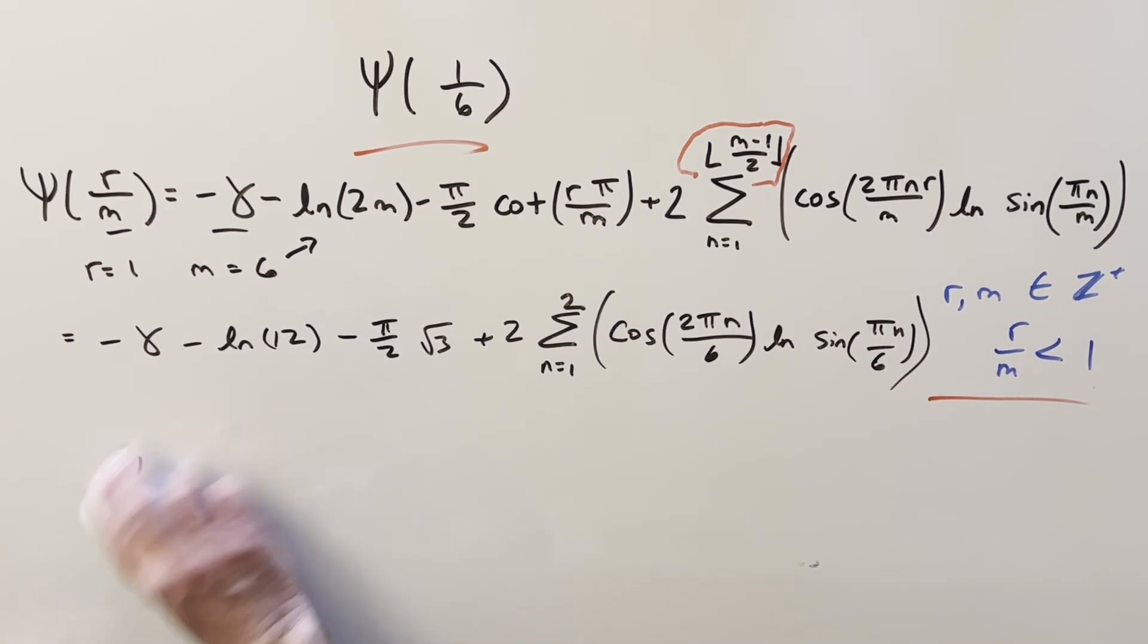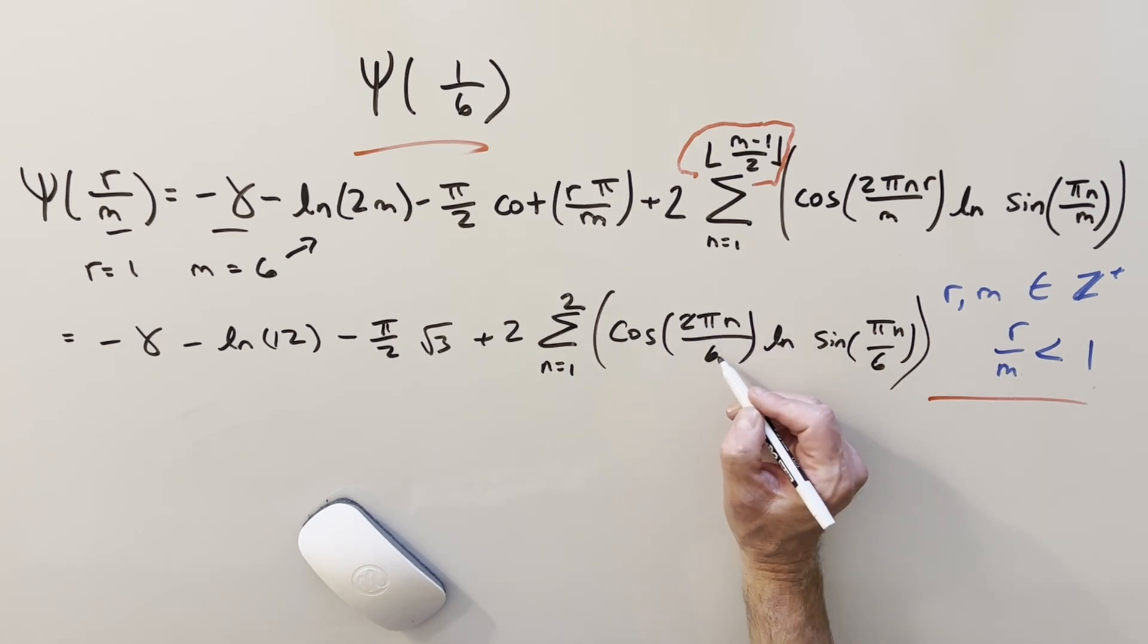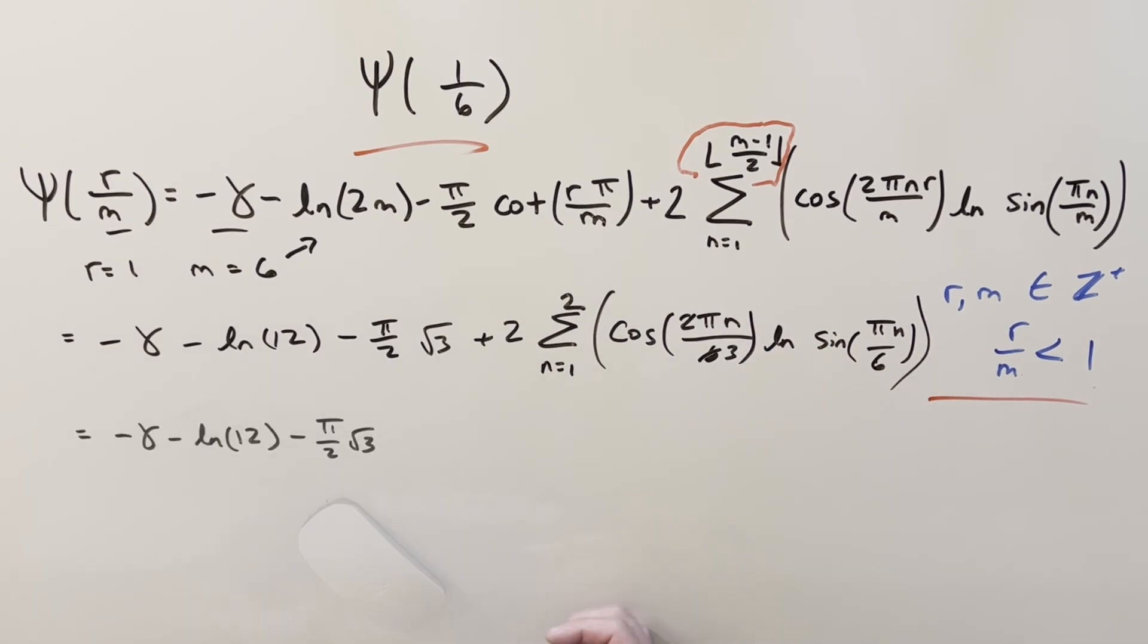Now let's just see if we can simplify a few things. First of all, this 2 over 6 here, let's cancel that. 2 over 6 is just 1 over 3. Next, let's just expand out this series. We're just going to have two terms. We're going to have n equals 1 and then n equals 2 for this. So plugging in n equals 1,